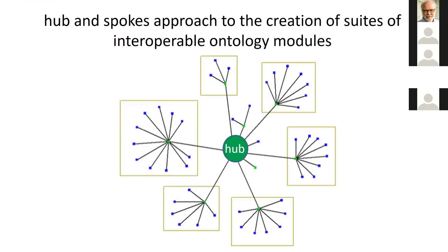The goal behind part one of the standard was originally to formalize the idea that the way you create interoperability between ontologies is to respect a hub and spokes structure, where the hub would be what is called a top level ontology — which is what part one of the standard is all about. The spokes and the spokes coming out of the spokes would be relatively more general ontologies at higher levels, and relatively more specific ontologies at lower levels.